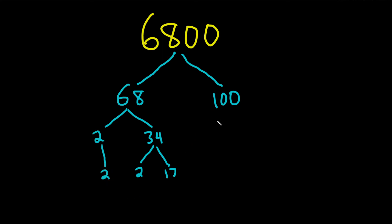Now let's work with the 100. That's 4 times 25. So this is 4, and this is 25. And then 4 is 2 times 2. So 2 times 2. And then 25 is 5 times 5. So 5 times 5.